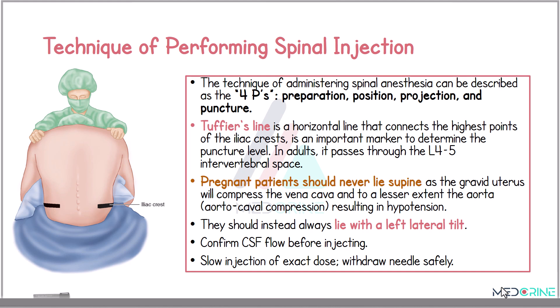In pregnant patients, they should never lie in a supine position, as the gravid uterus will compress the vena cava and to a lesser extent compress the aorta, causing aortocaval compression. This compression could result in hypotension. The pregnant patient should always lie with a left lateral tilt, and before administering the spinal injection, you need to confirm cerebrospinal fluid flow before injecting. Then a slow injection is performed of the exact dose, and you need to withdraw the needle safely.